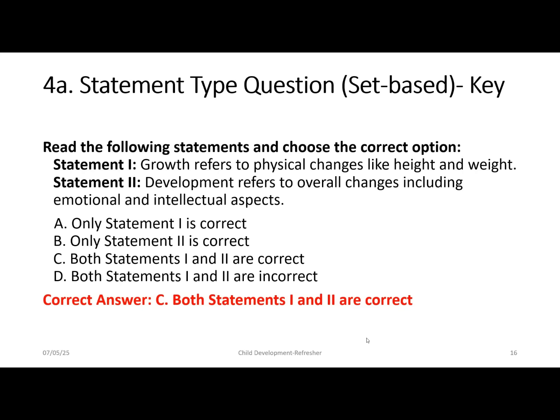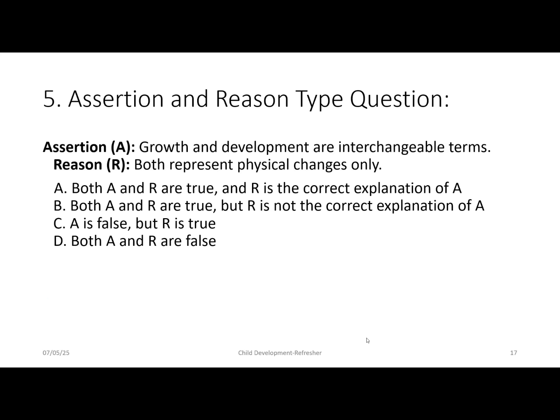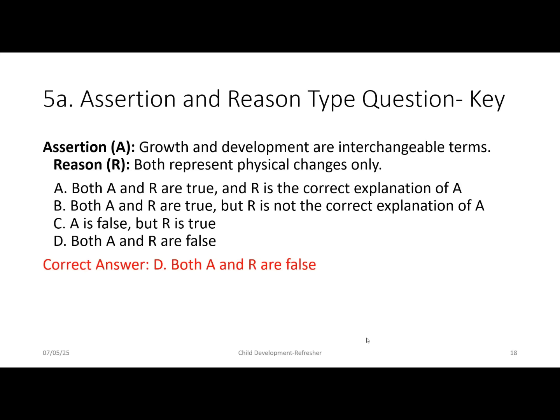The fifth type is the assertion and reason question. Assertion A: growth and development are interchangeable terms. Reason R: both represent physical changes only. Option A: both A and R are true and R is the correct explanation. Option B: both are true but R is not the correct explanation. Option C: A is false but R is true. Option D: both A and R are false. The correct answer is D — growth and development are not interchangeable terms and do not represent physical changes only.